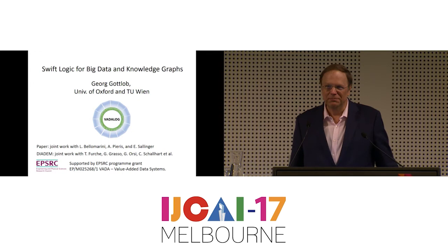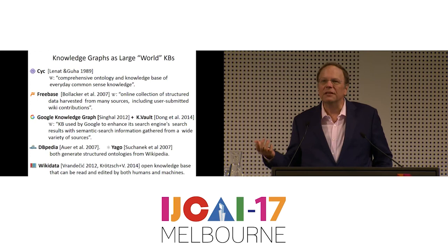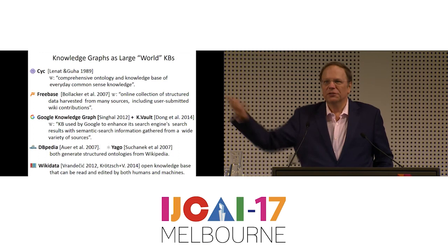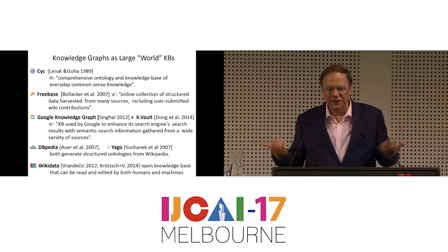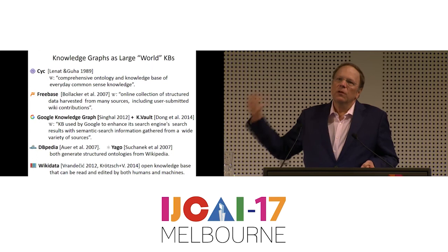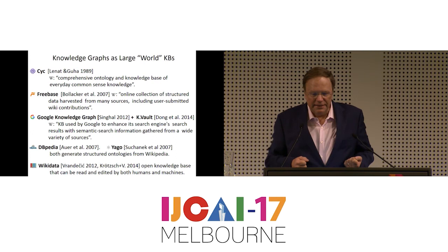When we speak about knowledge graphs, the first thing that comes to mind is big knowledge graphs — world knowledge graphs or large knowledge bases that capture world knowledge. Like Cyc, for instance, which was the first one, pretty elaborate but not extremely successful. Freebase doesn't exist any longer but was incorporated into the Google Knowledge Graph and then Wikidata. The Google Knowledge Graph is where the name 'Knowledge Graph' probably comes from. And later on, the Google Knowledge Vault, which is an extended knowledge graph where knowledge can automatically be extracted from the web, rather than just being manually added. And DBpedia, YAGO, and Wikidata — three knowledge graphs based on Wikipedia.